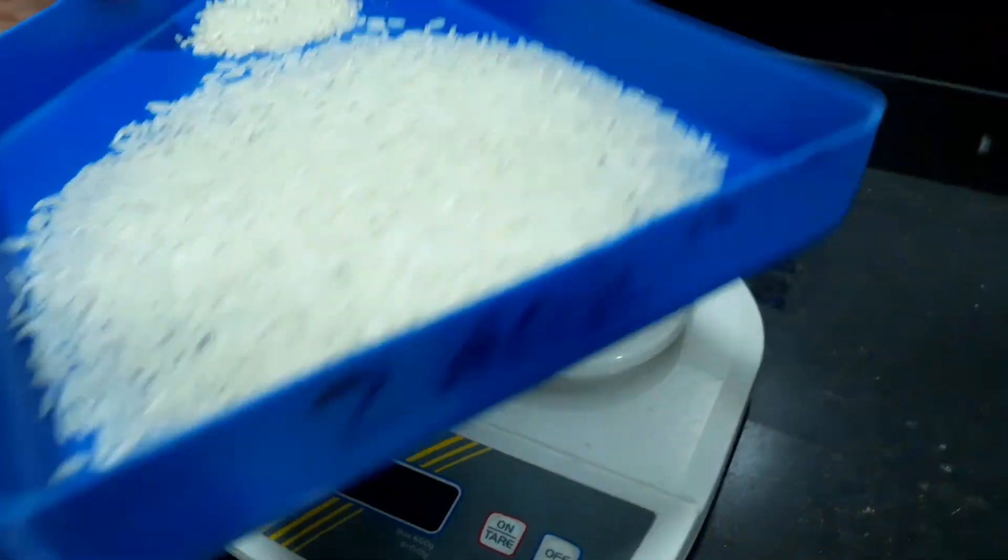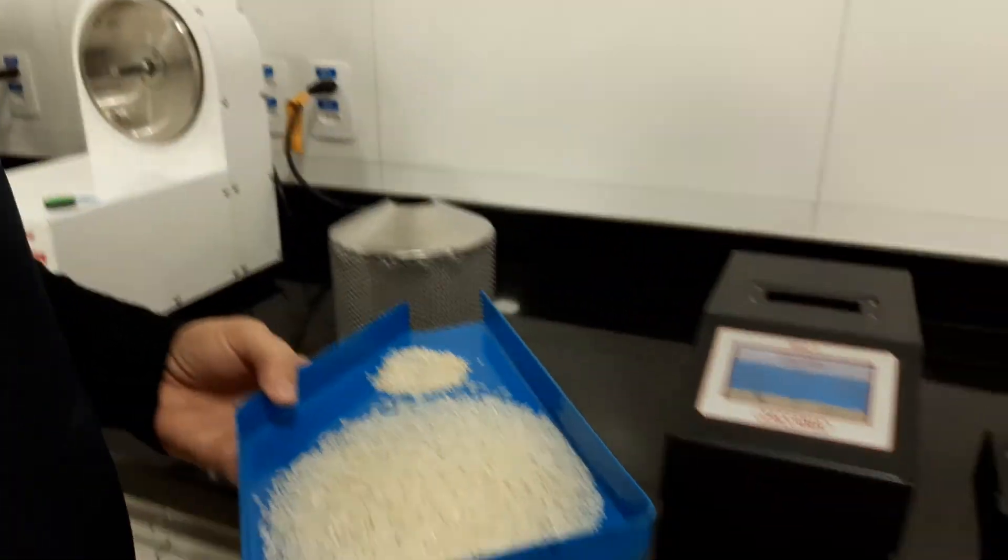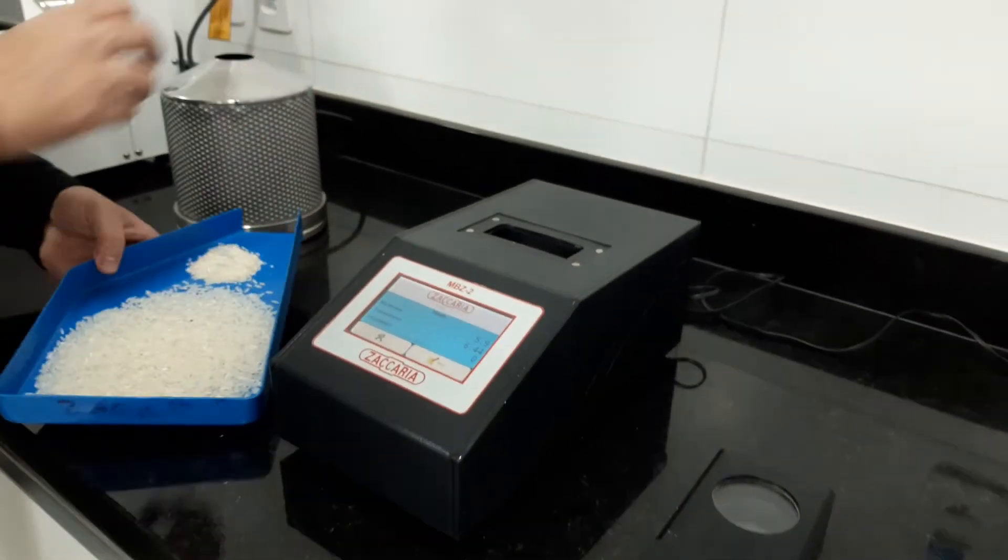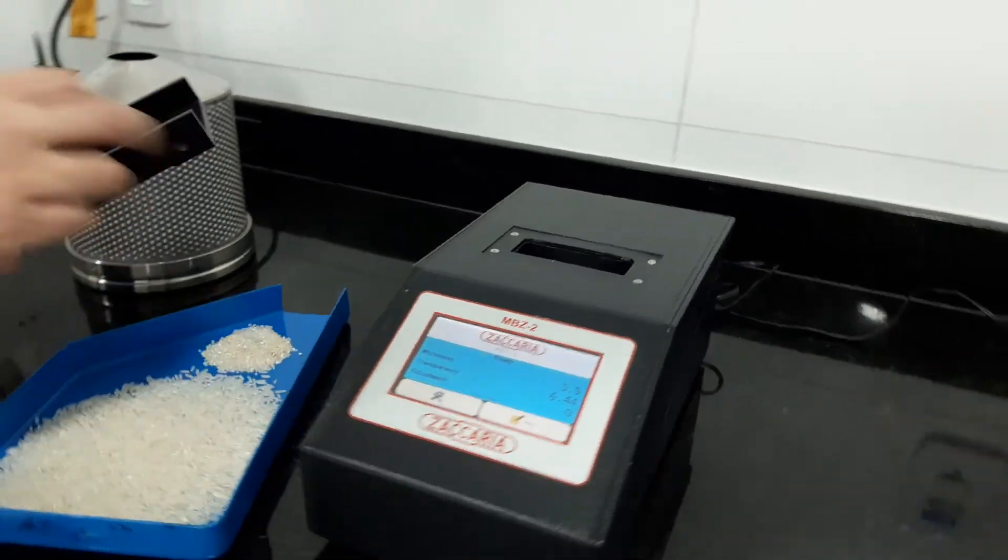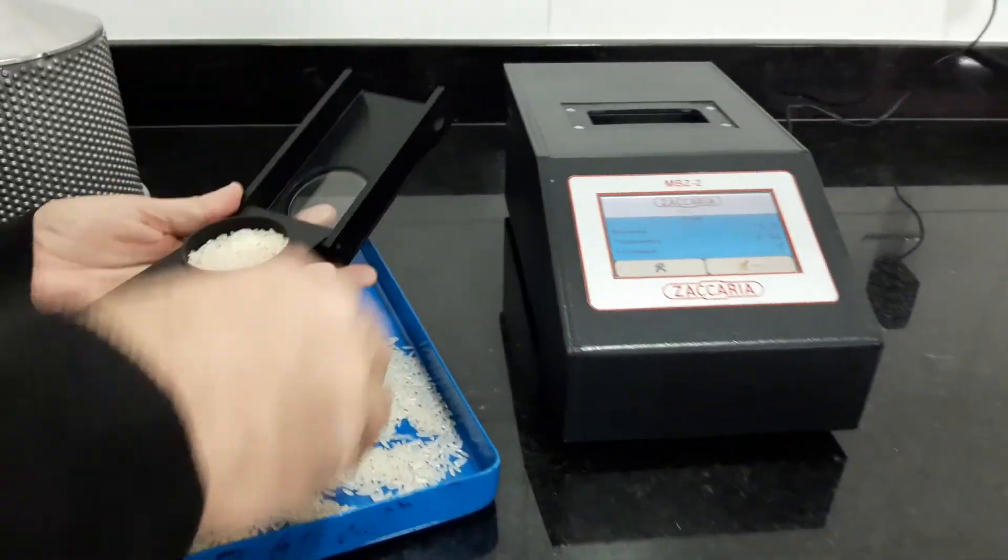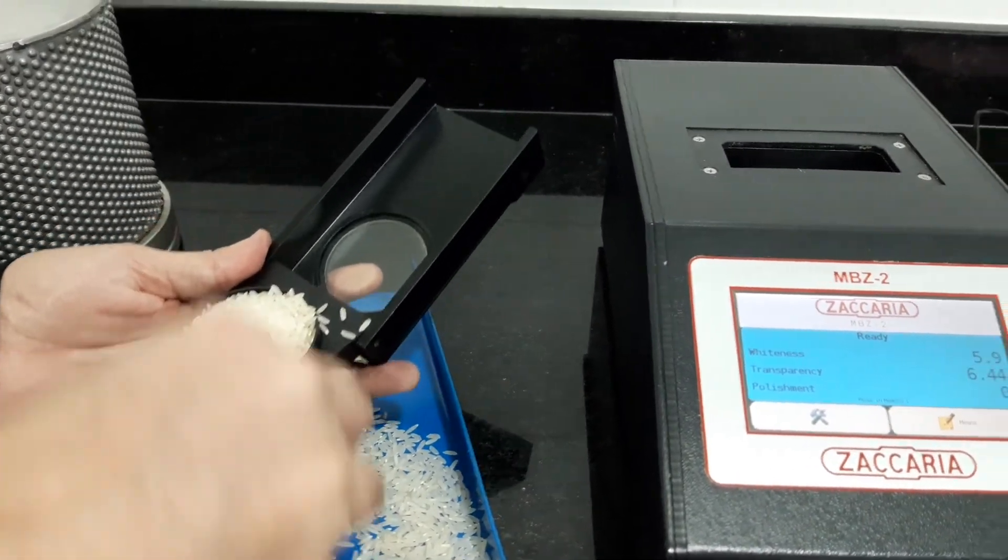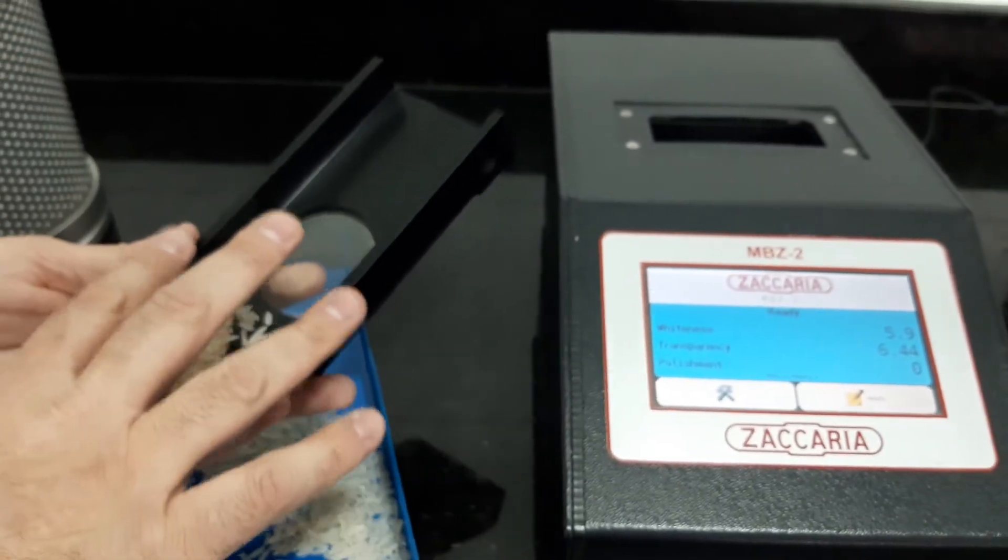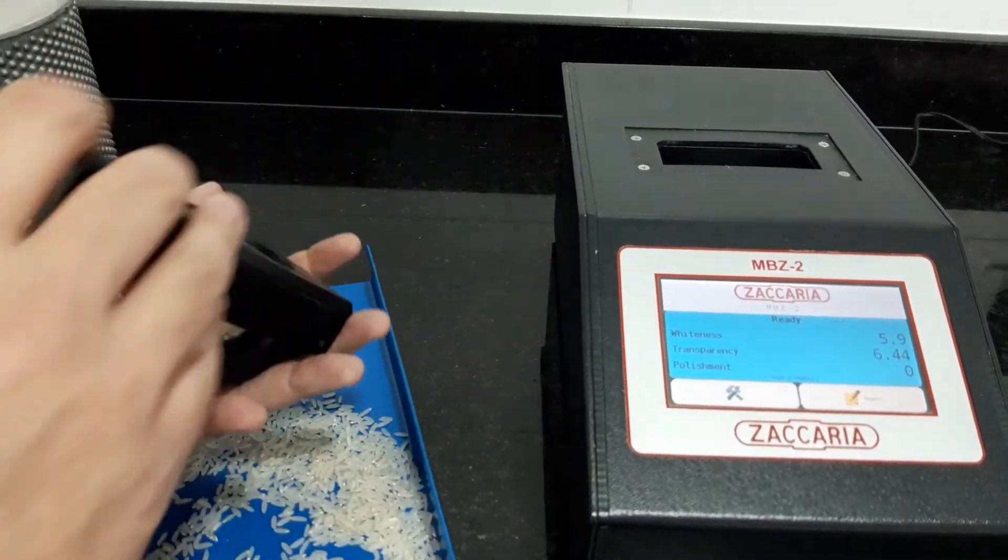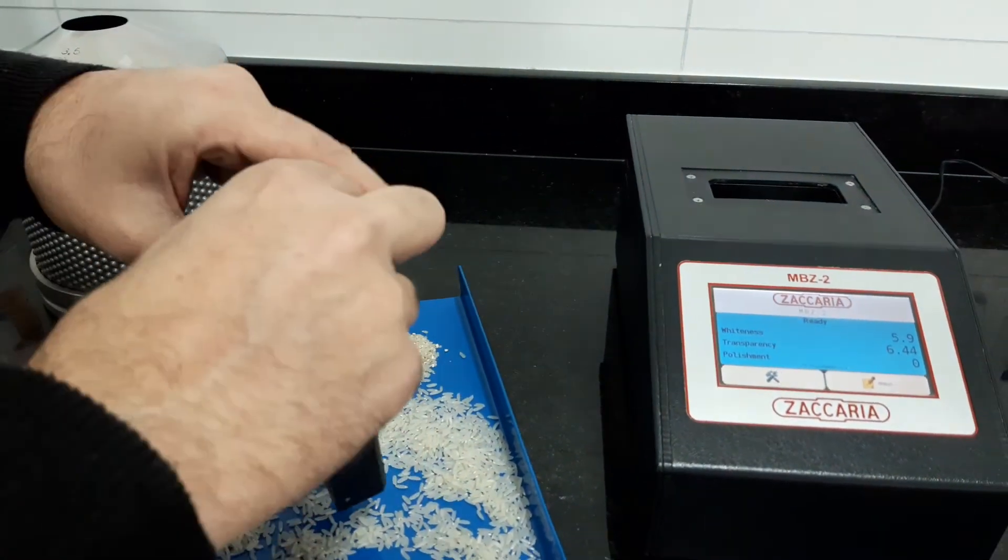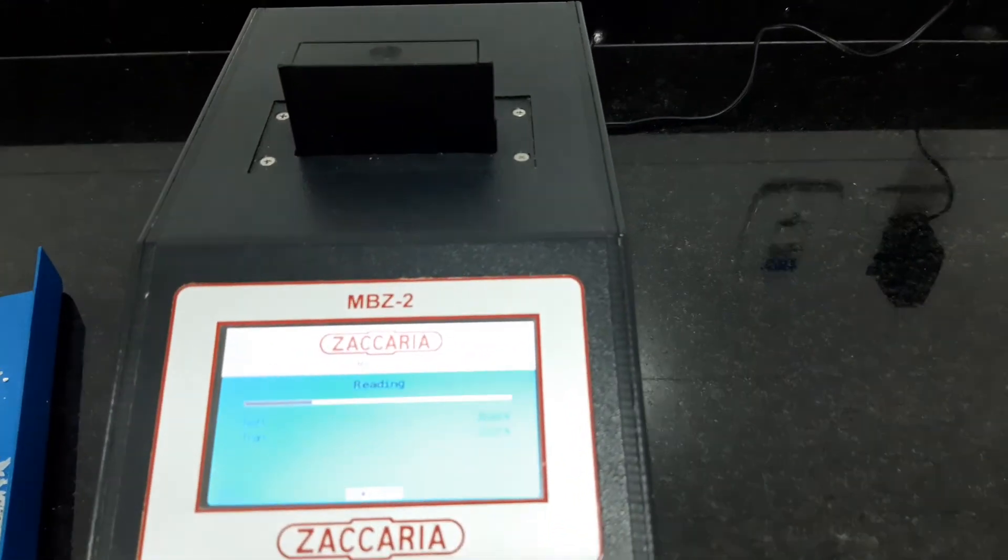And from now, we will measure the whiteness of this sample in our MBZ2, it is our whiteness meter. This is the pot, we will fill it up, the pot from here, and then put it in the machine.